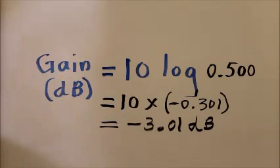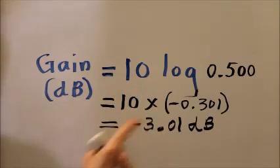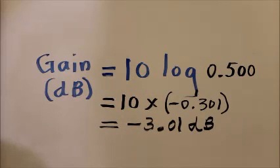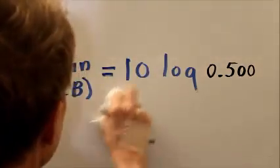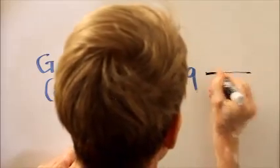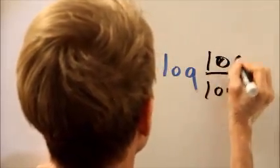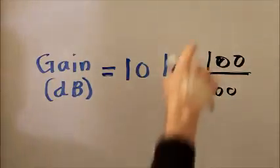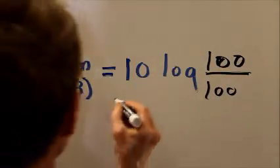Whenever we increase the power, we get positive gain. If we decrease the power, we get negative gain in terms of decibels. If we leave the power the same, then the gain is 0 decibels, which is easy enough to figure out. Say we start with 100 watts per square meter and we end up with 100 watts per square meter. The log of 1 is 0. 10 times 0 is 0.